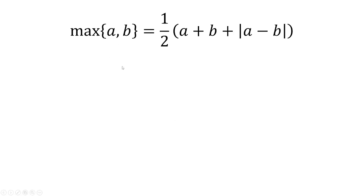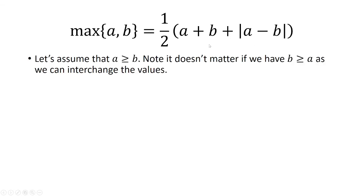First, let's start with the maximum of a and b, and we're going to start with the right side of the equation. So let's assume that a is greater than or equal to b. This doesn't really matter which one is bigger — we're going to assume a is bigger, as we can interchange the values. So if b is technically bigger, just let a equal b and you have this inequality.